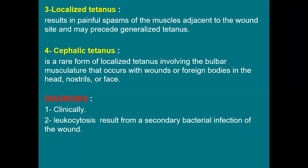Localized tetanus involves peripheral spasm localized only to the muscles adjacent to the wound site and may not progress. Cephalic tetanus is a rare type of localized tetanus involving bulbar muscles when the wound or foreign body is in the head, nostril, or face.